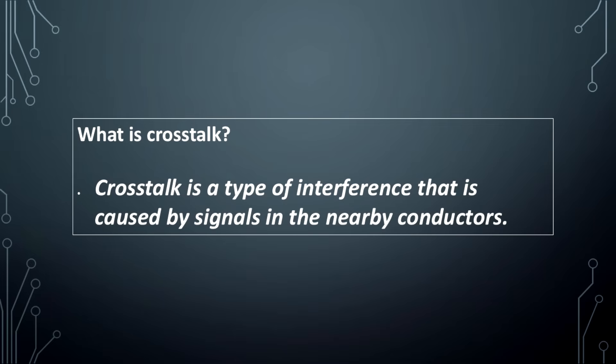What is crosstalk? Crosstalk is a type of interference that is caused by signals in the nearby conductors.